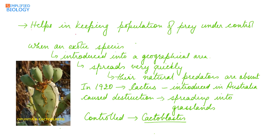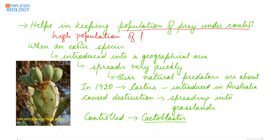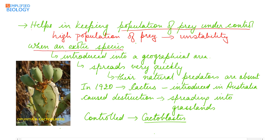Predation also helps in keeping the population of prey under control, as a high population density of prey will make the ecosystem unstable.